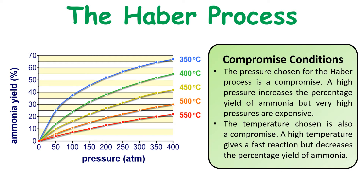At some point you will have to make a decision about the compromise conditions that are used. Generally, the compromise conditions chosen are 450°C at a pressure of 200 atmospheres.